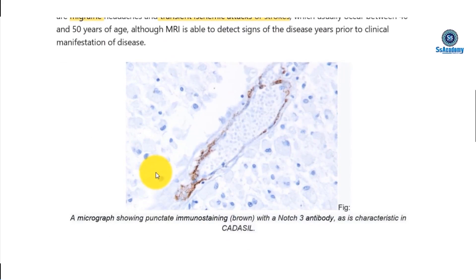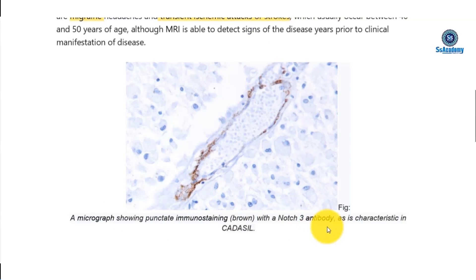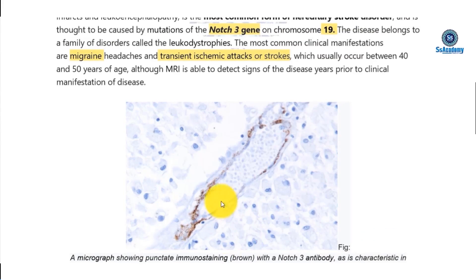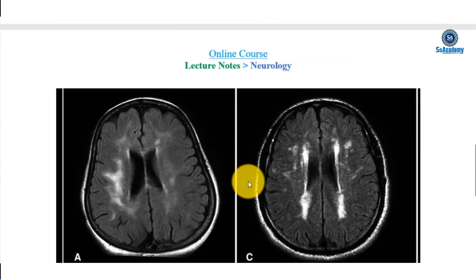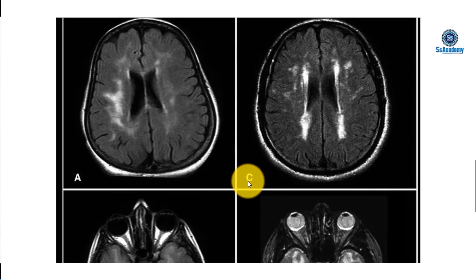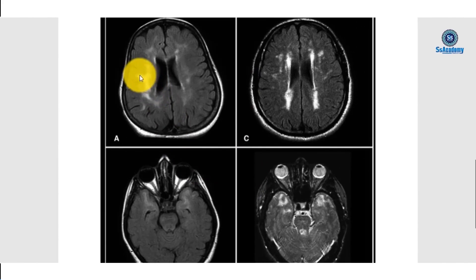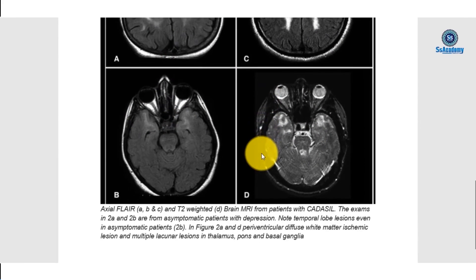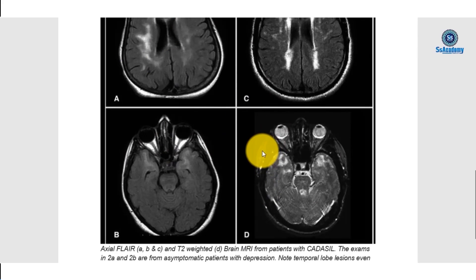Here is a micrograph showing punctate immunostaining with a brown color — immunostaining with a NOTCH3 antibody, which is characteristic for CADASIL. In the photograph, it is very important to describe the white matter lesions: bilateral symmetrical white matter lesions in different areas are typical for CADASIL.